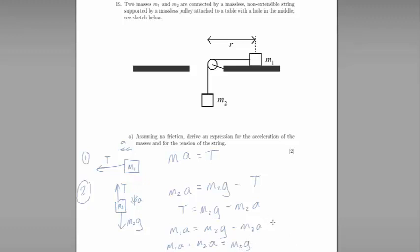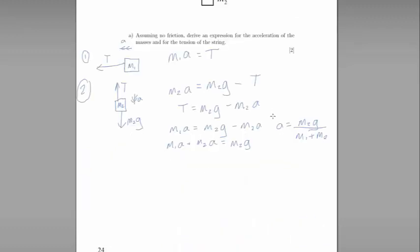If we factorise and rearrange, that will give us A equals M2G divided by M1 plus M2. If we want here, we could get rid of G and replace that with 10. I'm going to leave it as G. Now that is our equation for the acceleration.